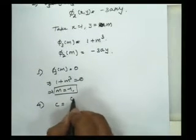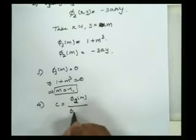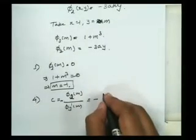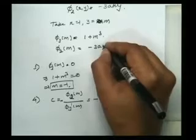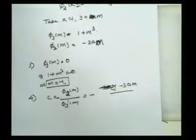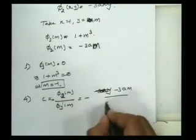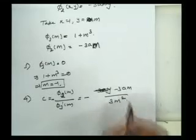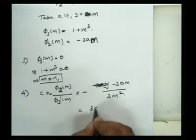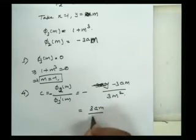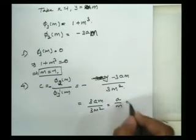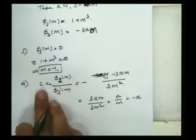The formula for c is: c = -phi_2(m) / phi_3'(m). Here phi_2(m) = -3am and phi_3'(m) means the derivative of phi_3(m). The derivative of 1 + m³ is 3m². By simplifying: c = -(-3am) / 3m² = 3am / 3m² = a/m. Since m = -1, we get c = -a.